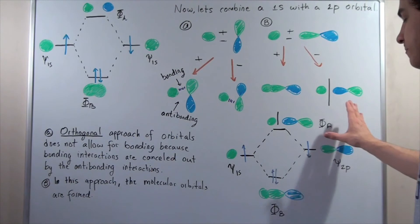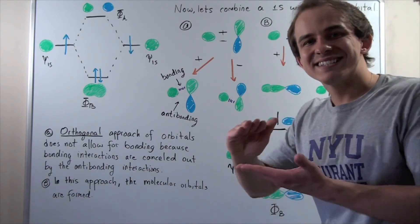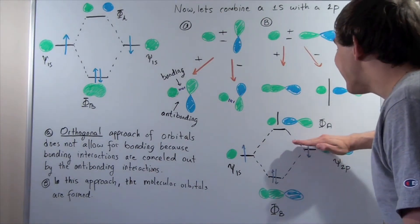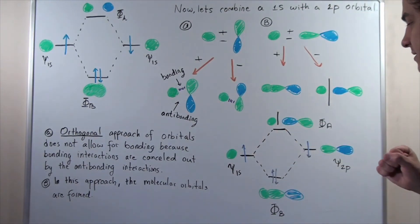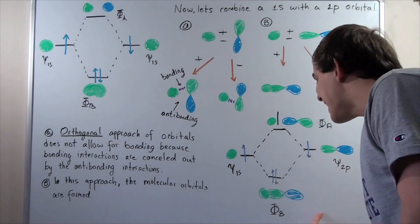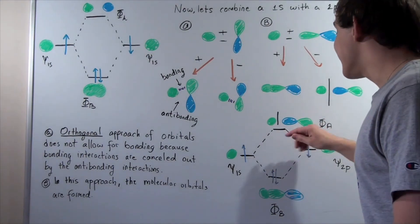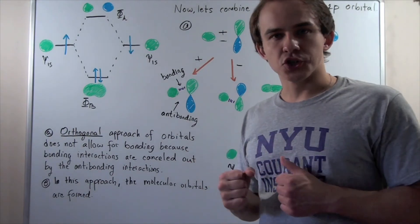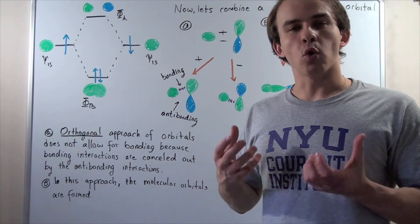This is our energy diagram. The 1s orbital is here, and remember the 2p orbital is slightly higher on the energy level. One electron in the 1s and one electron in the 2p interact to form a stabilizing, lower-energy bonding molecular orbital and a destabilizing, higher-energy anti-bonding molecular orbital. In the next lecture, we're going to see how two 2p orbitals interact to form molecular orbitals.